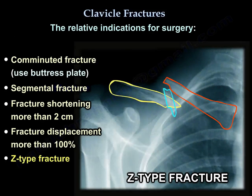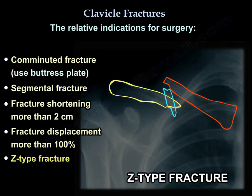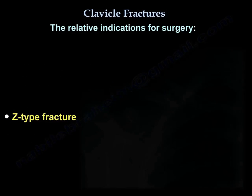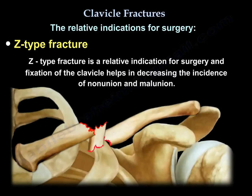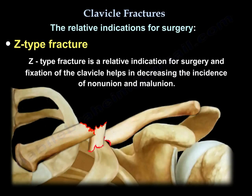There are some relative indications for surgery, such as comminuted fracture — for which we use a buttress plate — segmental fracture, fracture shortening more than 2 cm, fracture displacement more than 100%, and the Z-fracture. The Z-fracture is a relative indication for surgery, and fixation of the clavicle helps decrease the incidence of nonunion and malunion.